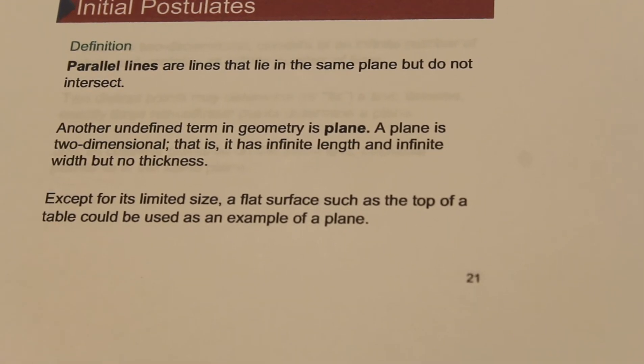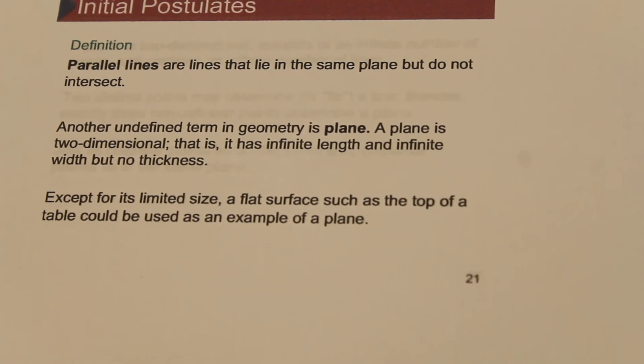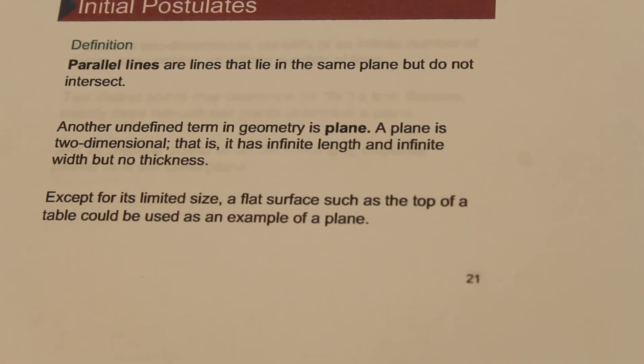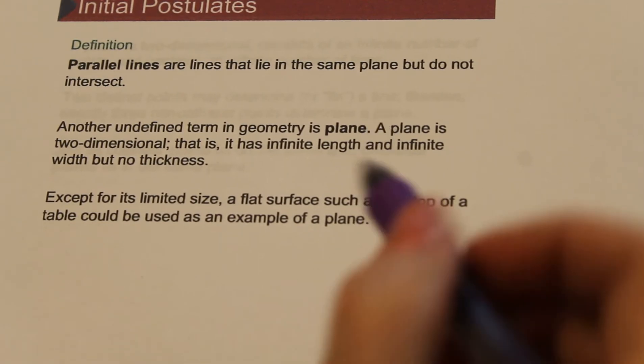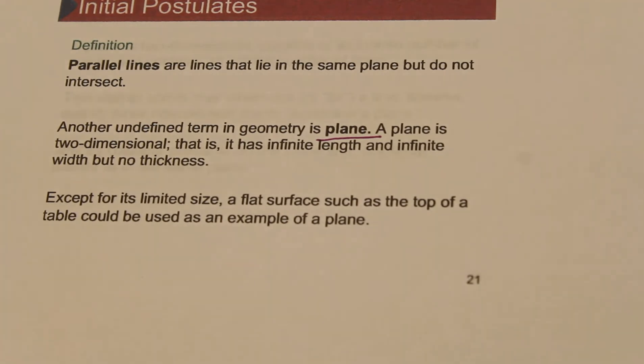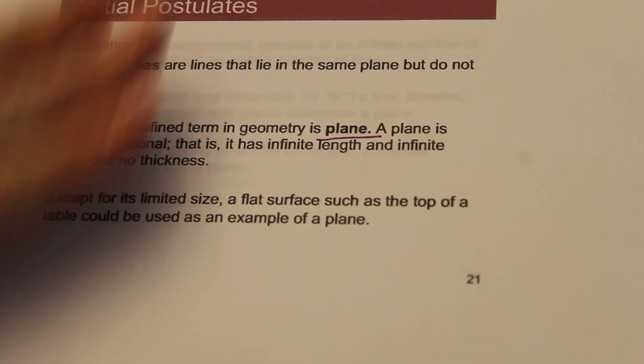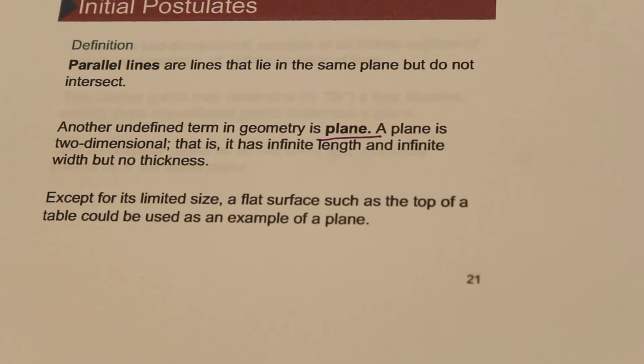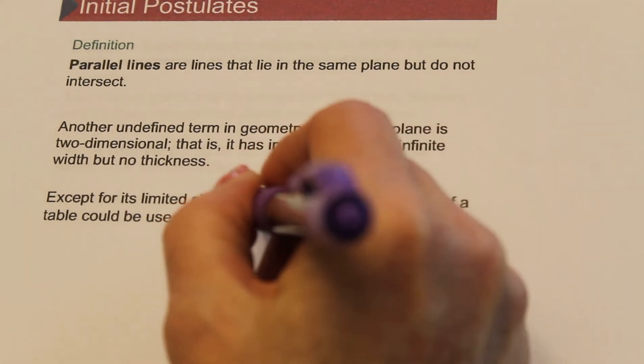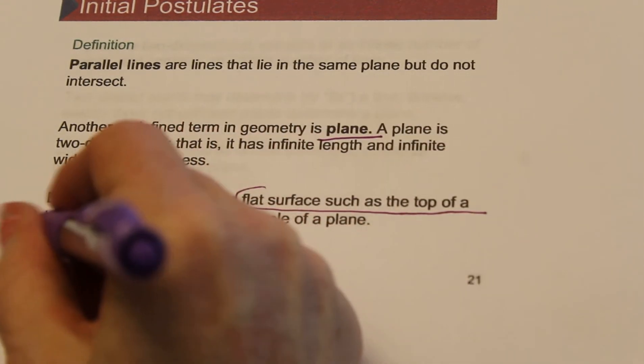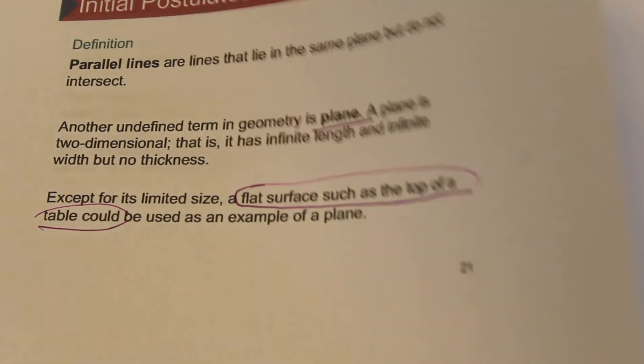Getting back to lines, here's our definition of parallel lines. Parallel lines are in the same plane but they never intersect. So here's our last undefined term. Well, we'll get into space at the very end, but a plane is a collection of lines. It's like a flat surface. So like the top of a table or the wall of a room or a whiteboard would be considered a plane. So a plane is a flat surface, such as the top of a table or a piece of paper.